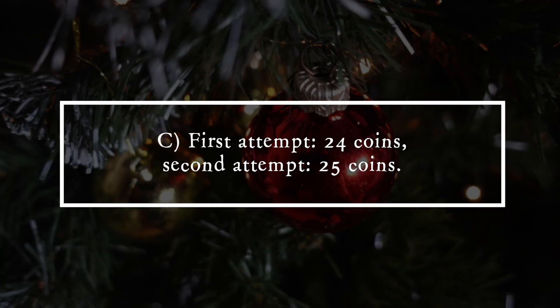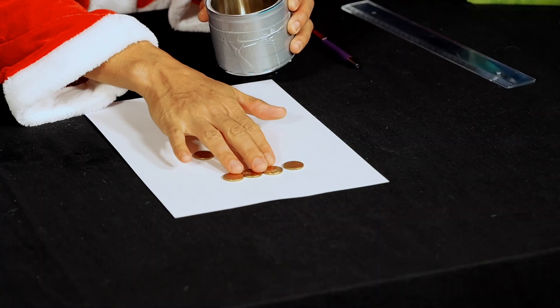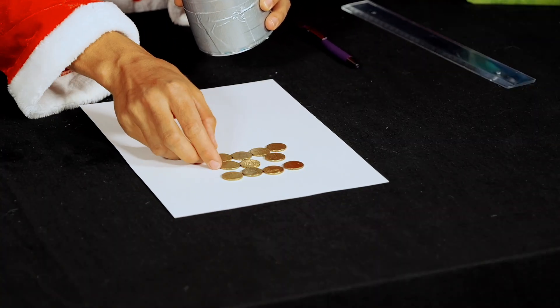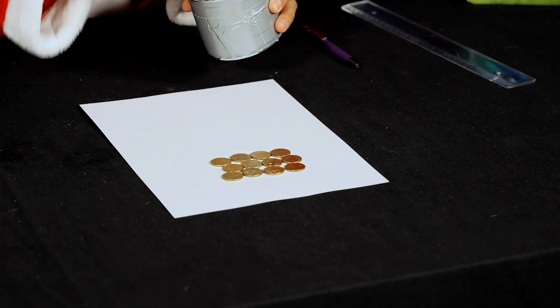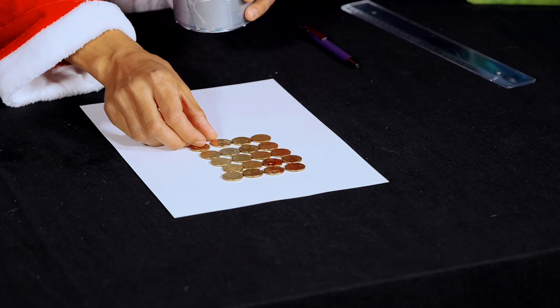The answer is C: first attempt 24 coins, second attempt 25 coins. In the first attempt, Mrs. Santa places exactly six rows of four coins directly below each other, creating an even grid of six by four coins.